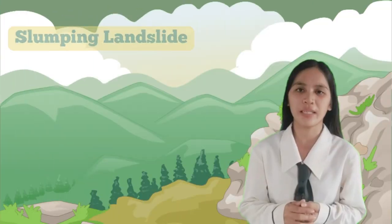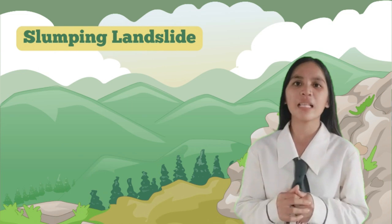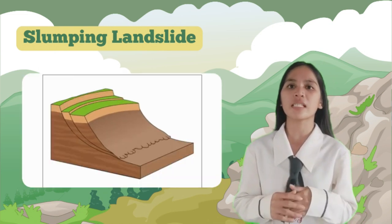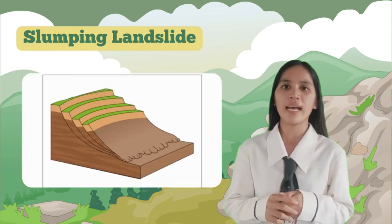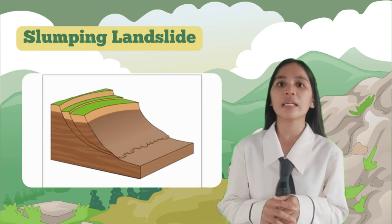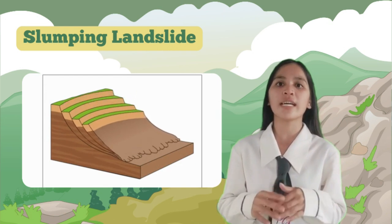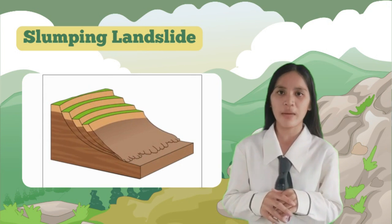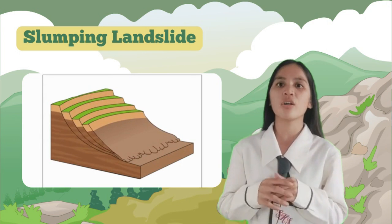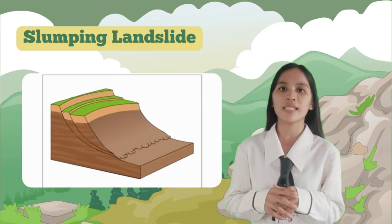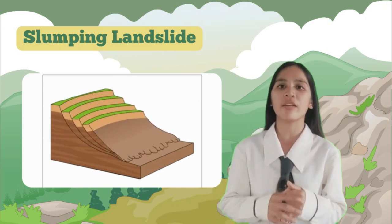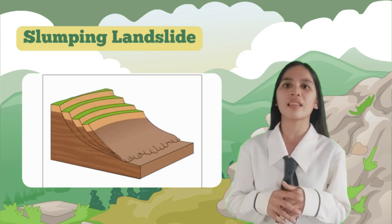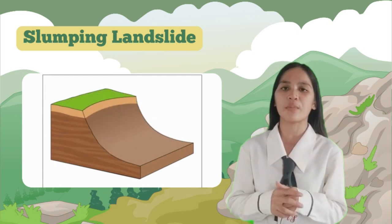Next, let's discuss slumping landslides. Slumping occurs when a mass of soil or rock moves as a single unit along a curved surface. This type of landslide typically occurs in areas with weak or saturated soils. Slumping is characterized by distinctive concave or spoon-shaped features and can be triggered by heavy rainfall, rapid snow melt, or human activities that alter slope stability.